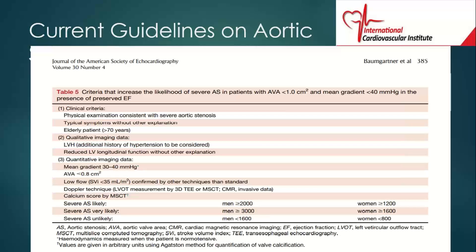When discussing patients with low gradient aortic stenosis — that is, patients with a valve area less than one centimeter squared, a mean gradient less than 40, and a peak velocity less than four meters per second — there are some additional features. If you see them, it points towards severe aortic stenosis. We're talking about the physical examination: certain features that would point towards severe aortic stenosis.